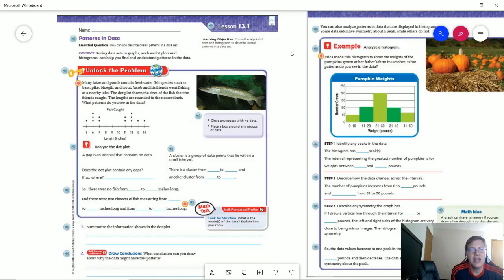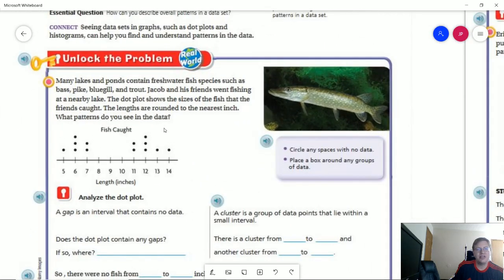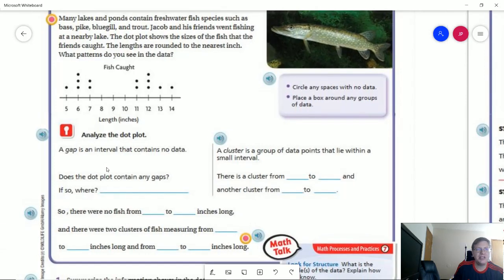So let's go ahead and take a look at our unlock the problem. We have a series of data points that represent the number of fish that were caught and what the size of those fish were, assuming that we are rounding to the nearest inch. The first thing we want to look at is do we have any gaps? Well we have a huge gap from 8 to 10 and so what they want us to do is go ahead and circle the spaces that don't have any data.